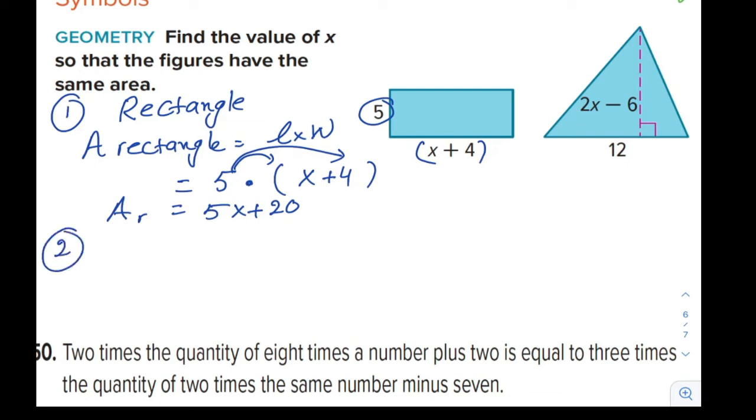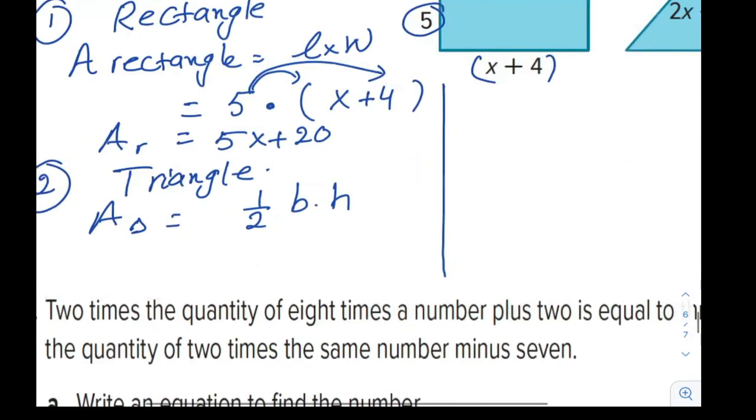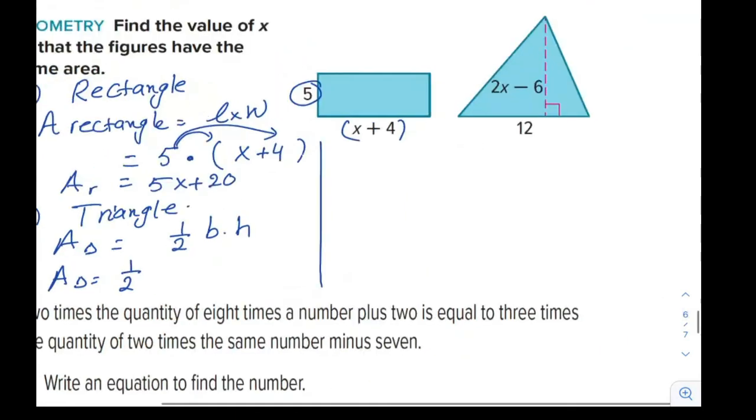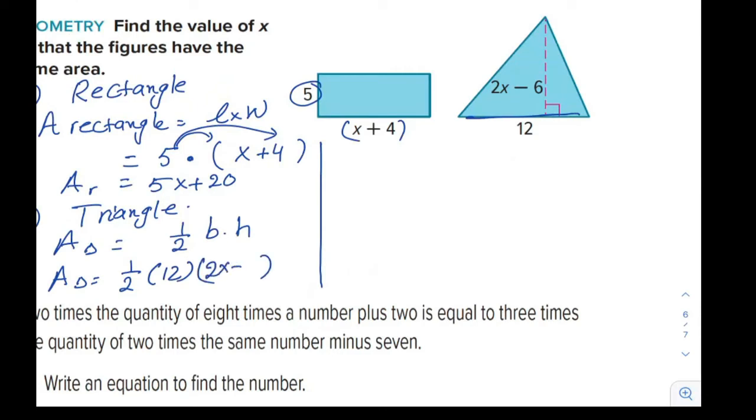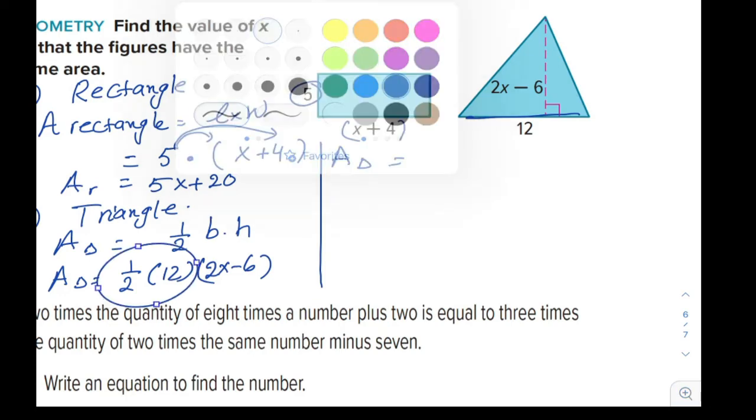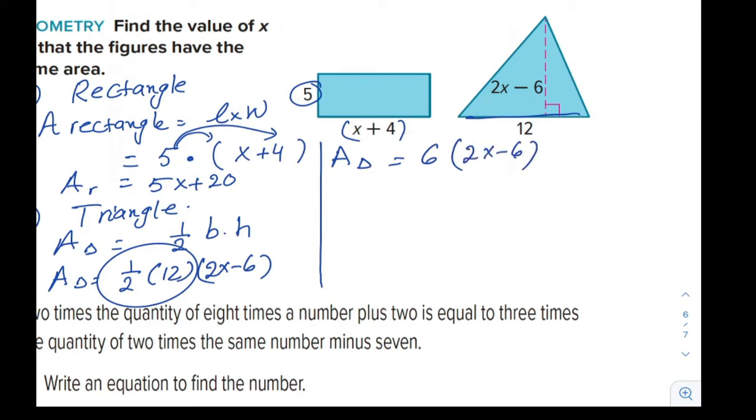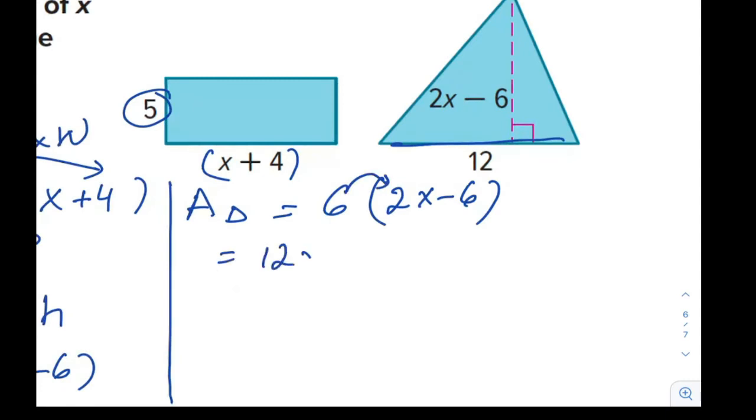And let's simplify it. We will distribute as we know 5x plus 20. This is the area of the rectangle. Now, the second shape is triangle. The area of the triangle is half base by height. And let's apply. We have here area of the triangle, half times. Our base is 12. So I will put it. Our height is 2x minus 6. Let's simplify. Area of the triangle is half of the 12. Half of the base is 12. And this is 2x minus 6. We will distribute. So it will be 12x minus 6 times 6 is 36. This is the area of the triangle.